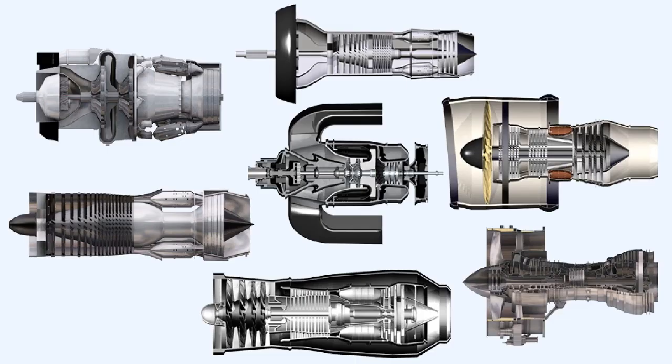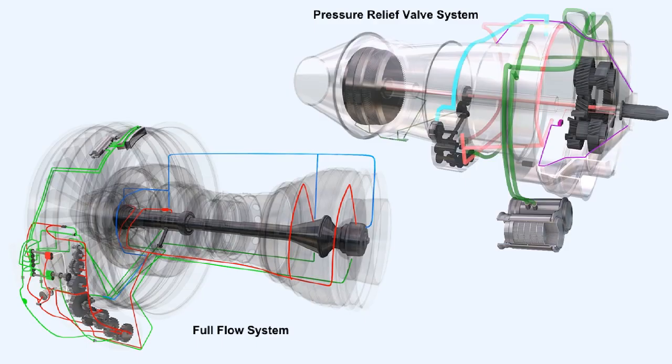Most gas turbine engines use a self-contained recirculatory lubrication system in which the oil is distributed around the engine and returned to the oil tank by pumps. There are two basic recirculatory systems which we'll investigate here. They are the pressure relief valve system and the full flow system.